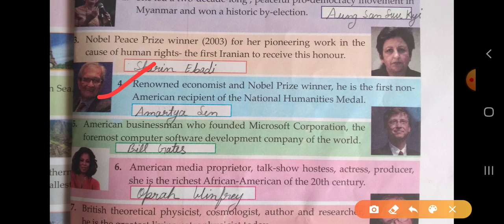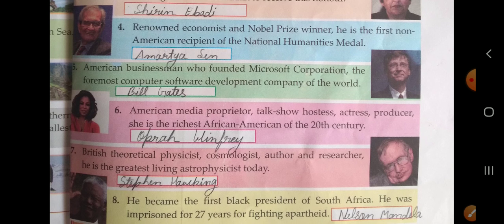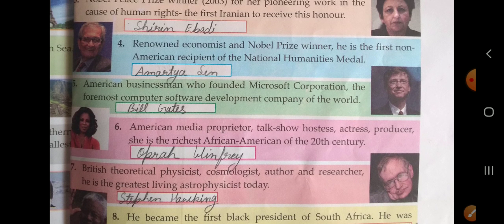Fourth: renowned economist and Nobel Prize winner. He is the first non-American recipient of the National Humanities Medal. He is Amartya Sen. Fifth: American businessman who founded Microsoft Corporation, the foremost computer software development company of the world. He is Bill Gates.